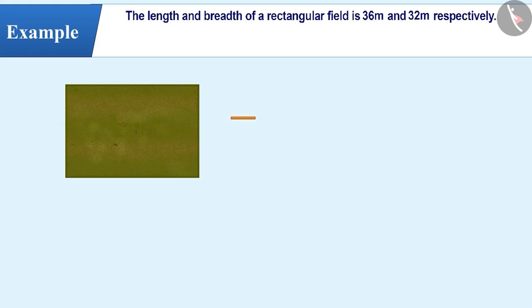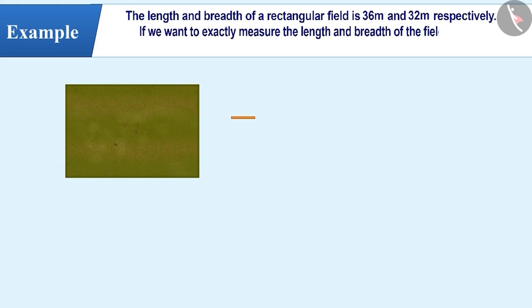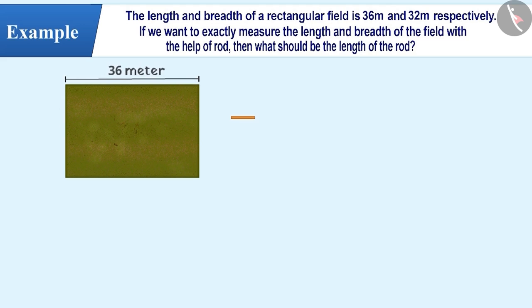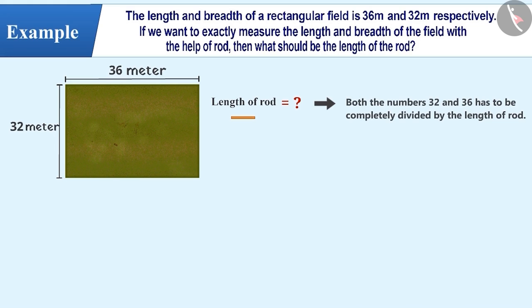Next example: The length and breadth of a rectangular field are 36 meters and 32 meters respectively. If we want to measure the length and breadth of the field with the help of a rod, what should be the length of the rod? It is only possible when both numbers 32 and 36 can be completely divided by the length of the rod. That means the common factor of 32 and 36 will be the length of the rod.